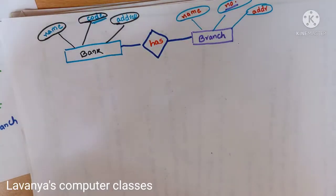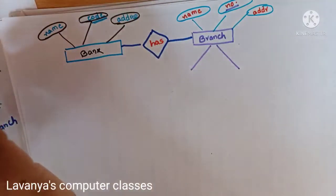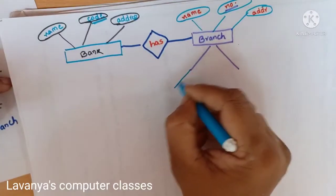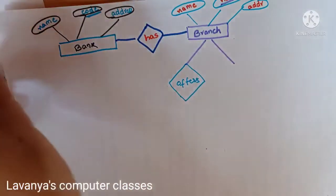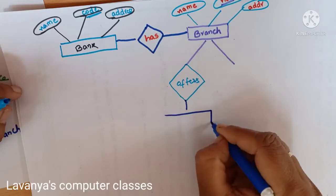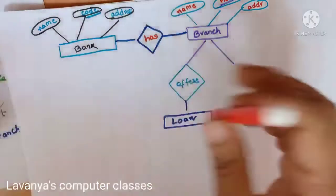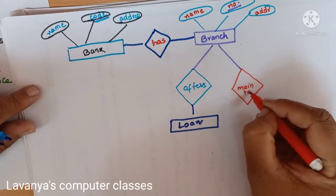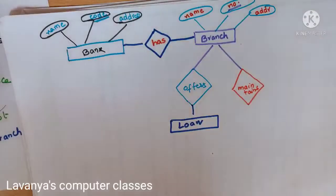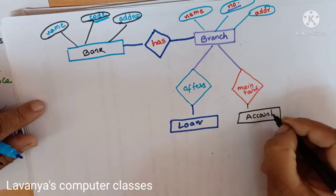Branch offers loans to the customers. Loan is one more entity set. Branch also maintains accounts — that is another relationship. So branch has two relationships: branch offers loans, and branch maintains accounts.